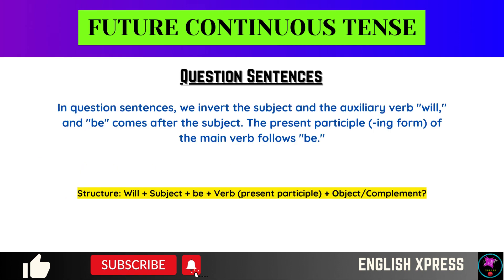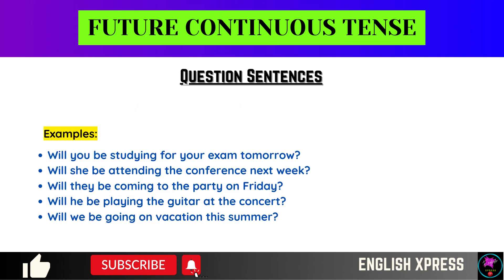In question sentences, we invert the subject and the auxiliary verb 'will', and 'be' comes after the subject. The present participle ing form of the main verb follows 'be'. Examples: Will you be studying for your exam tomorrow? Will she be attending the conference next week? Will they be coming to the party on Friday? Will he be playing the guitar at the concert? Will we be going on vacation this summer?